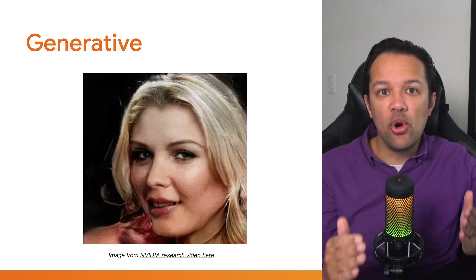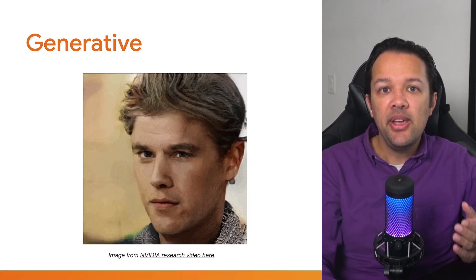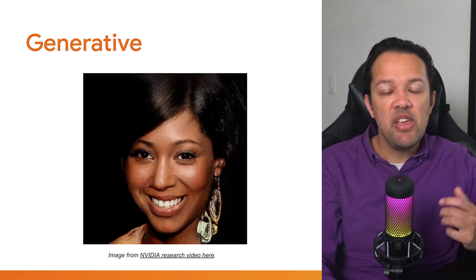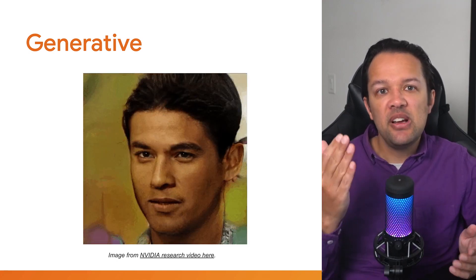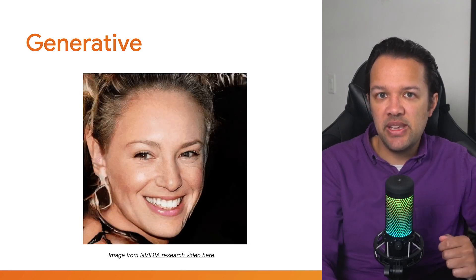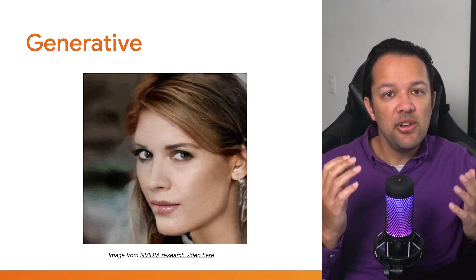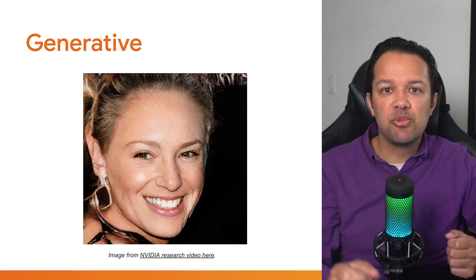That brings us onto the generative or creative use cases of machine learning, one of which you can see here, which was created by Nvidia's research. The key thing to note is that none of the faces in this animation are real — they've been dreamt up by the machine learning model, just like if you were asked to imagine a purple cat, you probably could do so even though you've never seen one. The machine learning has learnt the essence of what a human face is composed of, and then is asked to generate new ones that it thinks pass as real human faces. These are just a few examples of what machine learning is commonly being used for today.